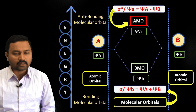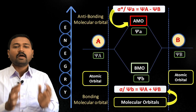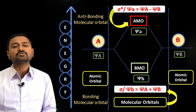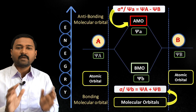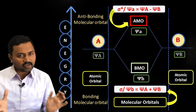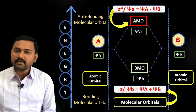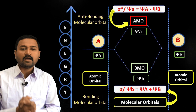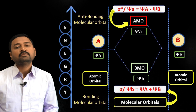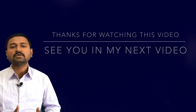This is the formation of bonding and anti-bonding molecular orbitals according to the linear combination of atomic orbitals, by applying wave mechanical treatment to atomic orbitals and the electrons revolving in them. Thank you so much for watching this video — see you in my next video.